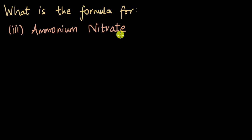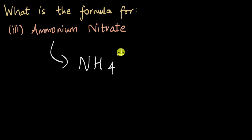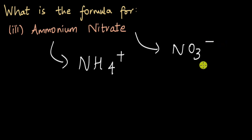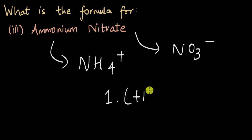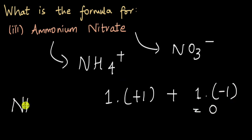Now we have ammonium nitrate. Both of these are polyatomic ions. The cation ammonium is NH₄⁺ with a plus one charge, and nitrate is NO₃⁻ with a negative one charge. The total charge on the ionic compound has to be zero. Since the charge on the cation is plus one and the anion is minus one, we take one of each: one times plus one plus one times minus one equals zero. So the formula is NH₄NO₃.